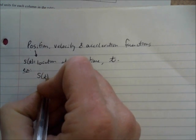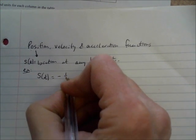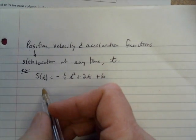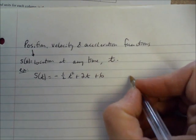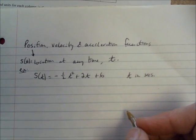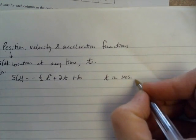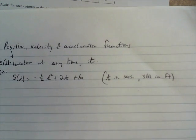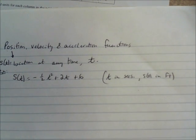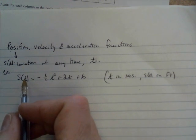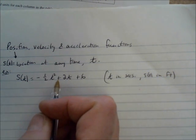Let's say s of t is equal to negative one-half t squared plus 2t plus 6. We'll say t is in seconds and s of t is in feet. It can be in meters, but we'll use feet today. This just means either the height of the object or the distance away from the origin follows this pattern.